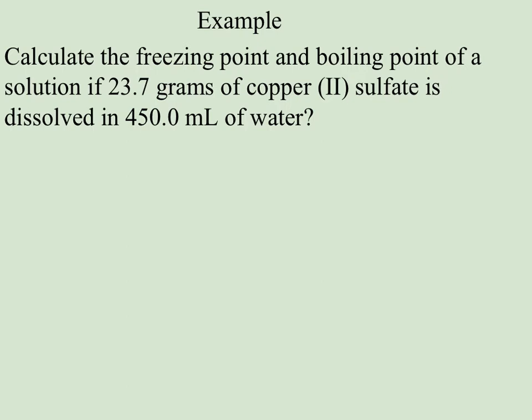Here's a little tougher example. We're again asked to find the freezing point and boiling point of a solution. And we're given both the solute and solvent's identity, but we're not given the molality directly. We're told it's 23.7 grams of copper (II) sulfate dissolved in 450 milliliters of water. So I need to use these two numbers to calculate a molality. And remember, little m needs to be in moles per kilogram.